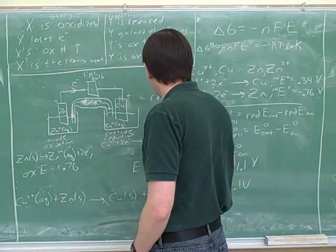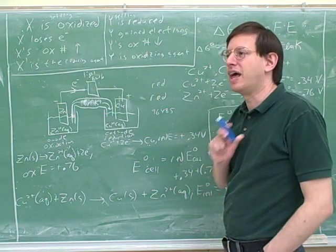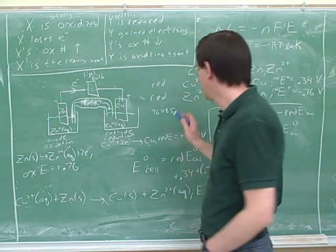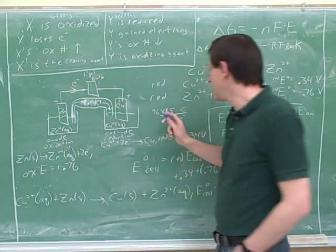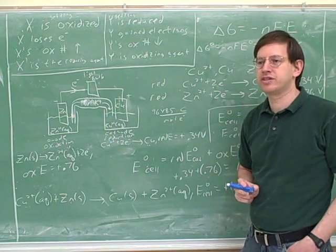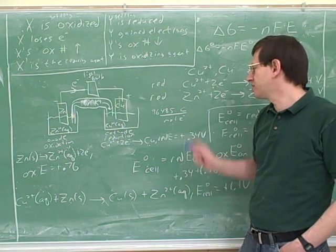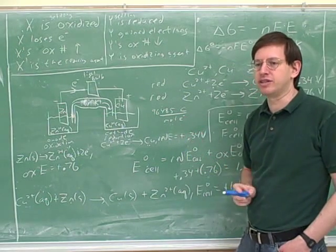No, that's current. Oh, there are no units. It's a constant. It is a constant, but it has units. It's 96,485 coulombs per mole of electrons. If you actually look in the textbook, I think it'll just say coulombs per mole. But it's important to realize it means per mole of electrons. Okay.